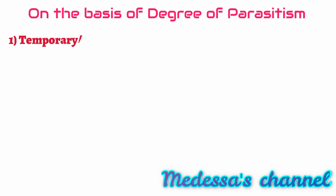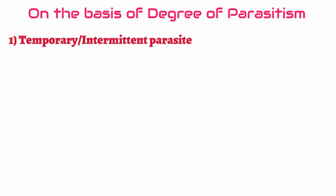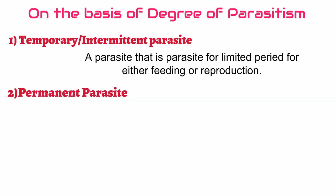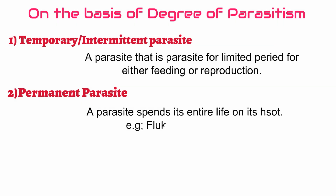On the basis of duration of parasitism, there are temporary or intermittent parasites — parasites such as mosquitoes that are parasitic for a limited period, either for feeding or reproduction. Number two are permanent parasites — parasites that live on their host until maturity or spend their entire life on the host, for example the flea or itch mite.